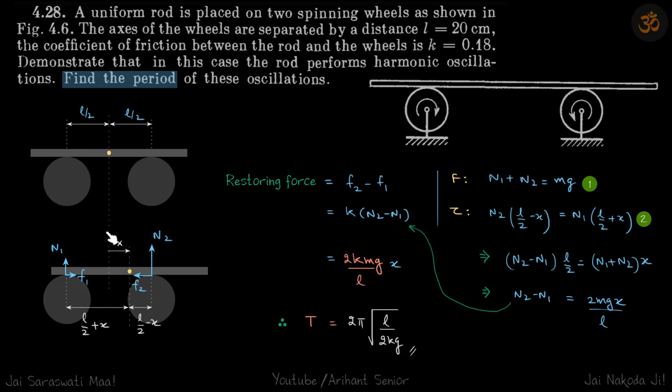Let's say the normal reactions on these parts are n1 and n2, and frictional forces are f1 and f2. Because the center of mass is shifted towards right, n2 will be larger, so this frictional force f2 will also be larger than f1.